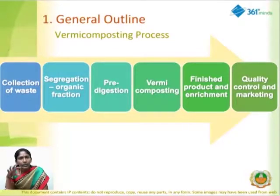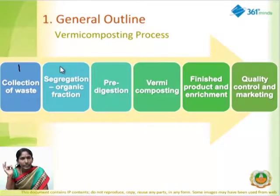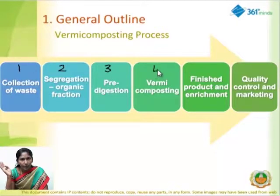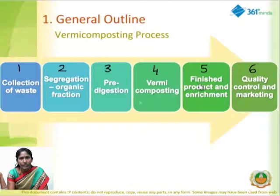The general outline includes six main topics. The first is collection of waste. The second is segregation of waste. The third is pre-digestion. The fourth is vermicomposting. The fifth is the finished product and its enrichment. And the sixth is quality control and marketing.